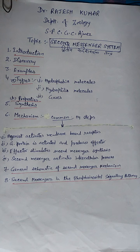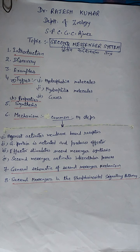Calcium ions are one type of secondary messenger and are responsible for many important physiological functions including muscle contraction, fertilization, and neurotransmitter release. The ions are normally bound or stored in intracellular components such as the endoplasmic reticulum and can be released during signal transduction. Similarly, cyclic AMP (cyclic adenosine monophosphate) is another second messenger.